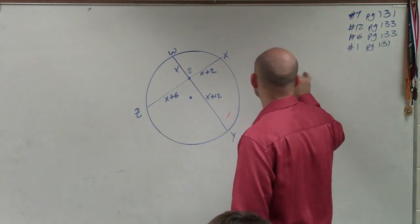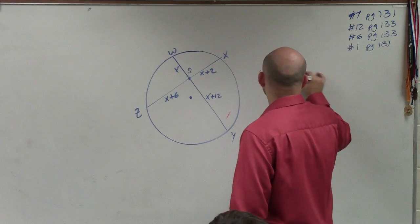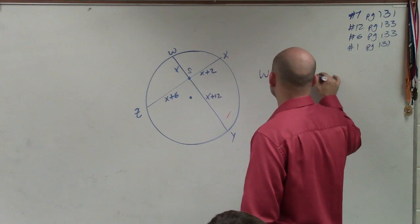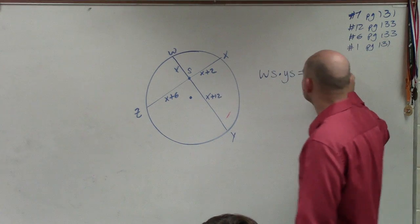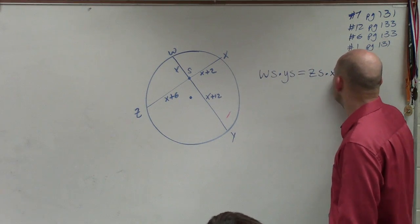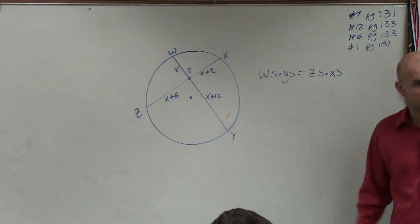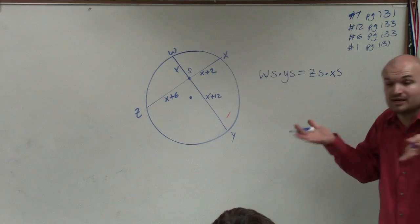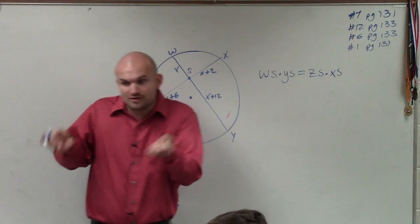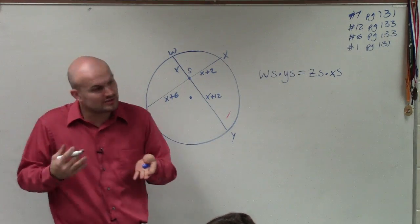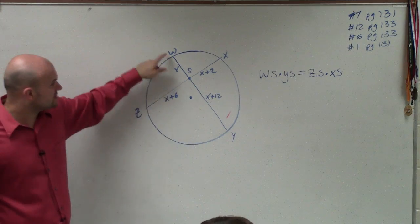WS times, I'll call it YS, is equal to the product of ZS times XS. Does everybody agree with me? I just rewrote what the answer was. So everybody at least should have written that down, because that was in the notes I just gave you. You have the product of their two chords when they're cut up are equal to each other. So now we just got to write in what each one is.